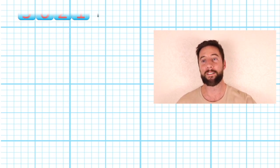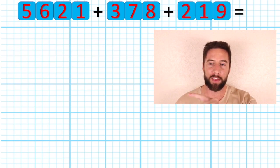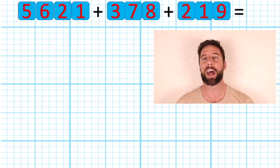We are going to look at questions pretty much as hard as we can get with column addition. We are looking at 5,621, add 378. That's not all. I'm going to add a third number, adding 219.